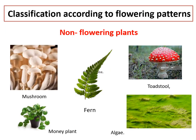Now coming to the second criteria, that is flowering pattern. We will classify most plants depending on this criteria. Can you recognize few of them in this slide? You know mushrooms; you also must have seen fern in the garden. The red color mushroom is non-edible and could be a poisonous mushroom, known as torspoon. All of these shown in the slide do not produce flowers — they are non-flowering plants. So how do they reproduce? They have another way of reproduction.